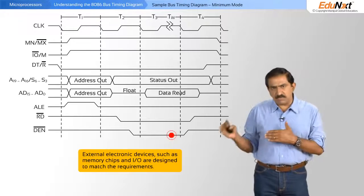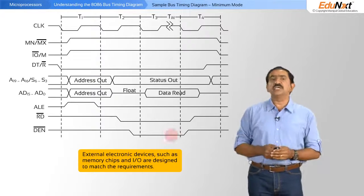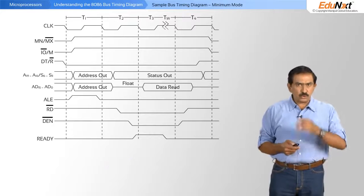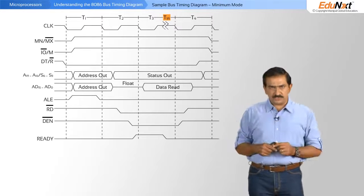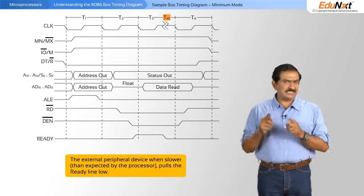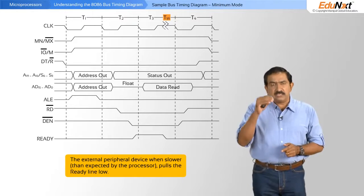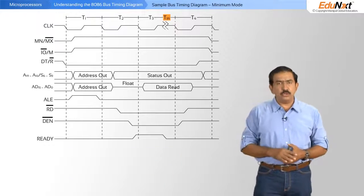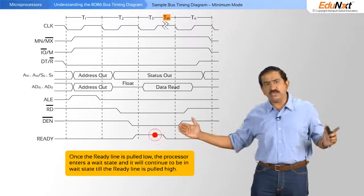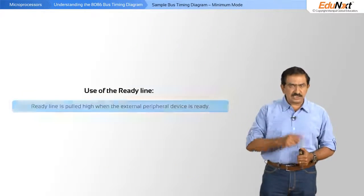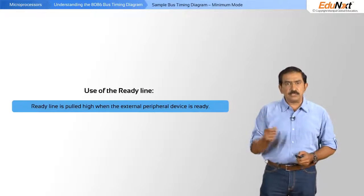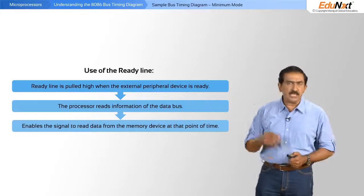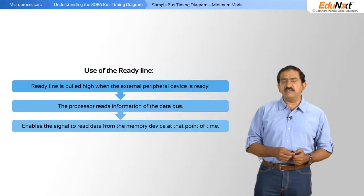External electronic devices like memories and IOs will have to be designed such that they match these requirements. The last signal in this particular set of waveforms is something called ready. If the external peripheral device is slower than the processor expects it to be, it is the responsibility of the external peripheral device to pull the ready line low. As soon as you pull the ready line low, the processor enters a wait state, and it will continue to be in wait state till the ready line is pulled high. Once the external peripheral device is ready, it will pull the ready line high. The processor then enables the data enable signal and will read data from the memory device at that point in time.